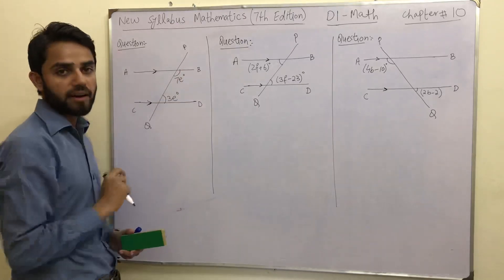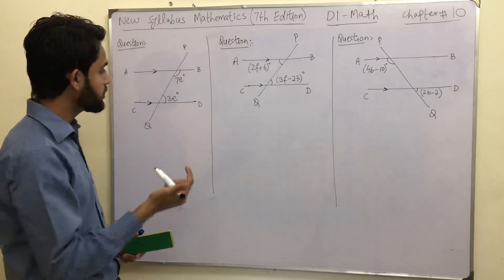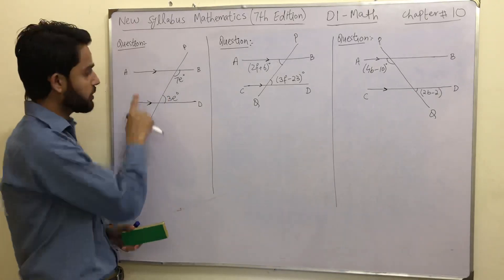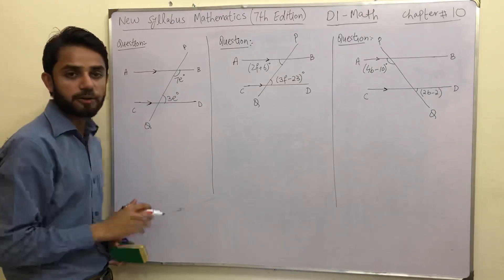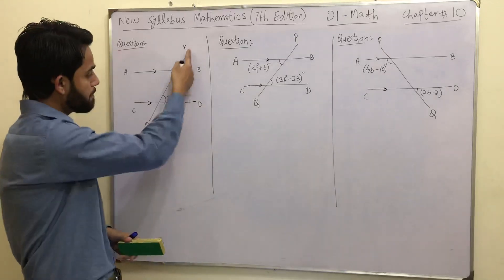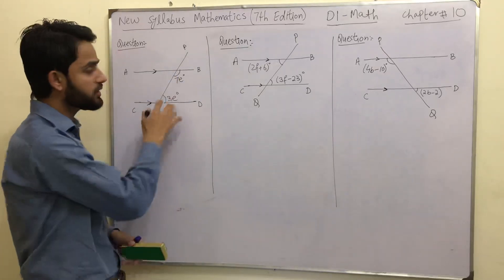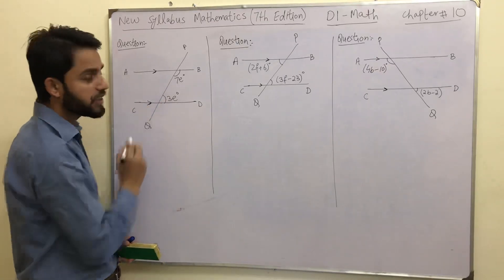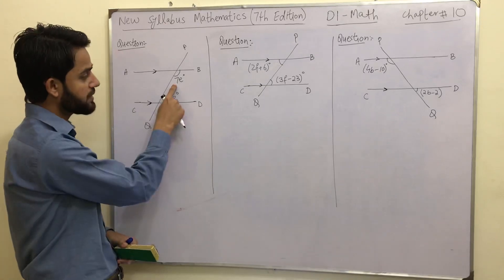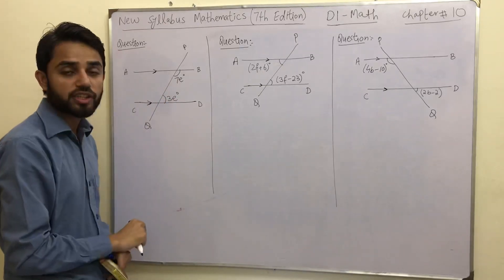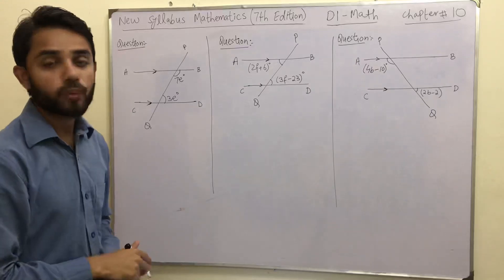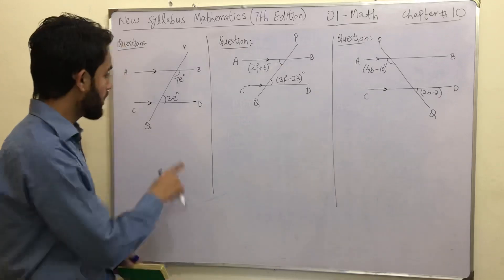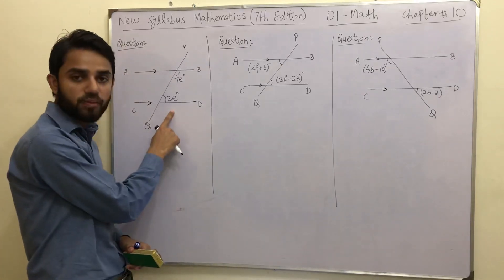These are the two parallel lines — we can tell because there are arrows on both lines. AB and CD are two parallel lines, and PQ is a transversal that cuts these two lines. If you look at this question, there are a few angles given to us: this angle is 7E and this angle is 3E. We have to find out the unknown E.